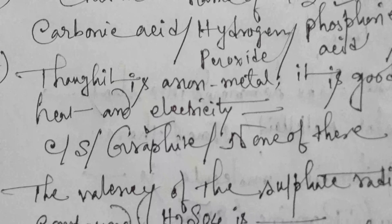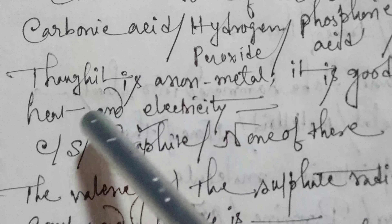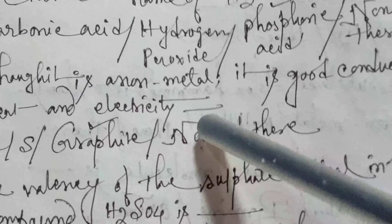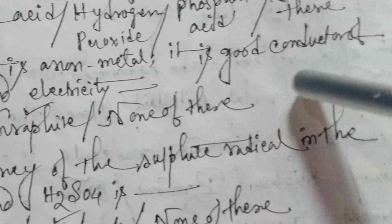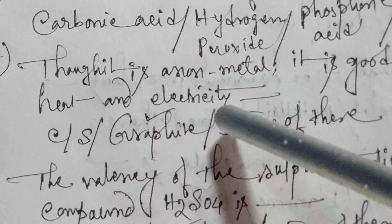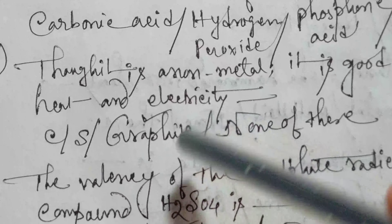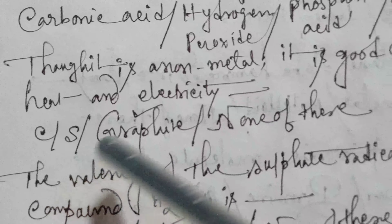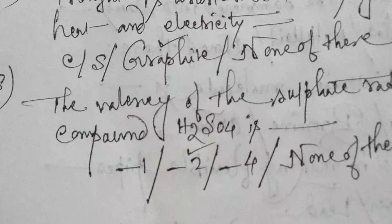Next: though it is a non-metal, it is a good conductor of heat and electricity. Options are carbon, sulfur, graphite, or none of these. The answer is graphite.